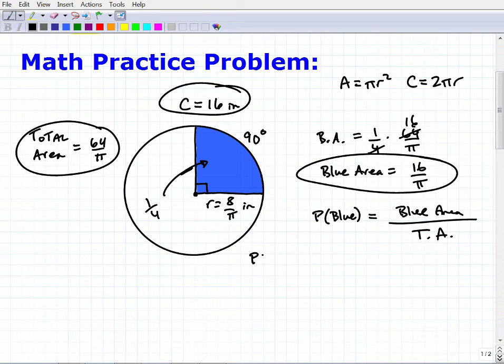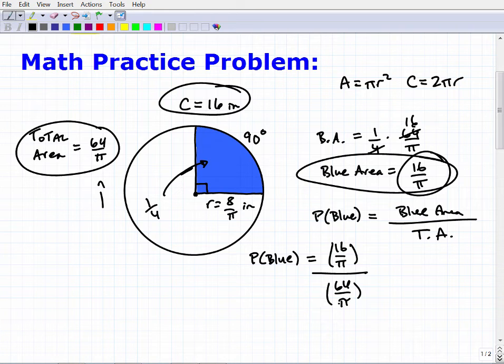So the probability of getting your little dart in the blue region is going to be the area of the blue region, which is 16 over pi, 16 over pi, divided by the total area, which we have here is 64 over pi, 64 over pi. So now we've got to figure this out. We've got to scoot this over here.